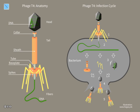Phages may be released via cell lysis, by extrusion, or, in a few cases, by budding. Lysis, by tailed phages, is achieved by an enzyme called endolysin, which attacks and breaks down the cell wall peptidoglycan. An altogether different phage type, the filamentous phages, make the host cell continually secrete new virus particles. Released virions are described as free and, unless defective, are capable of infecting a new bacterium. Budding is associated with certain mycoplasma phages. In contrast to virion release, phages displaying a lysogenic cycle do not kill the host but rather become long-term residents as prophage.